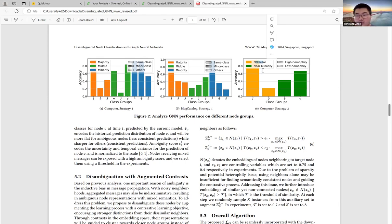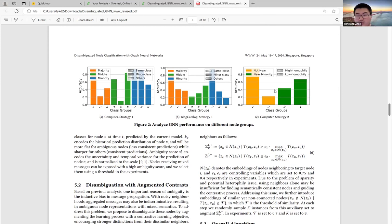We observe a distinct performance gap across these regions. For nodes near the minority, there's a huge performance drop between group one and group three.